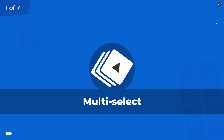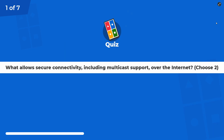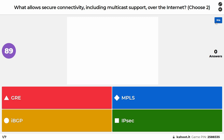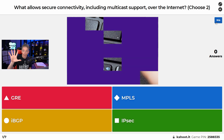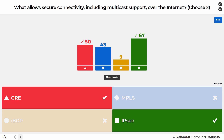It is multiple select: What allows secure connectivity including multicast support over the public internet? The answer is GRE and IPsec. Why is that the case? We need both multicast and secure connectivity.